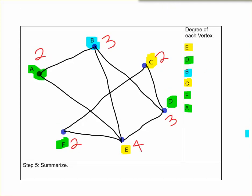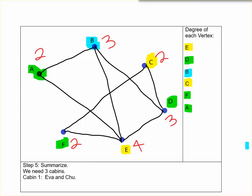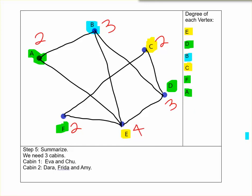And then finally we're also going to use these in story problems so we're going to write a summary. So in this case we see that we have three different colors so we need a minimum of three cabins. In cabin one we're going to put Eva and Chu. Cabin two are the ones I have highlighted in green. That would be Dara, Frida, and Amy. And then in this case I have cabin three Barb. Hopefully there's someone else to join her cabin.